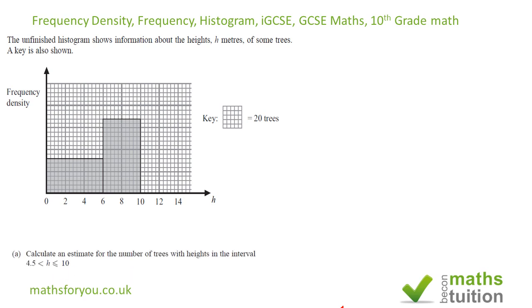So the first question says calculate an estimate for the number of trees with heights in the interval 4.5 to 10 meters tall. Now we need to notice here that each of these divisions is 0.4, so that's 4.4, 4.8, 5.2, 5.6, and then 6.